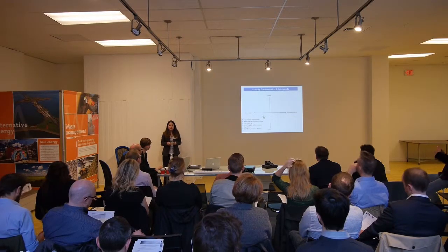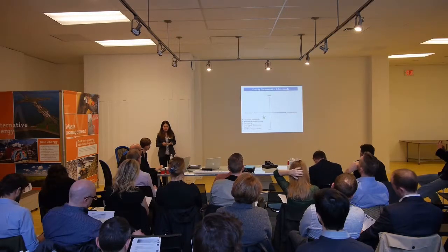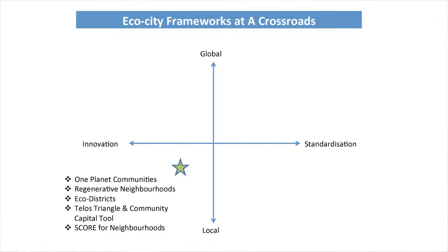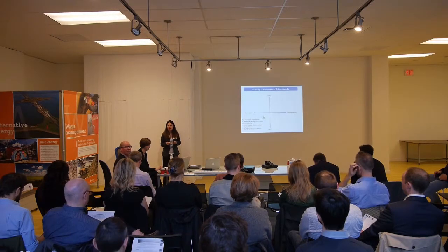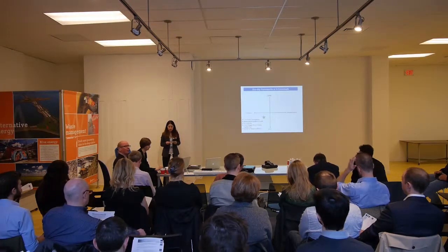The Sunflower Map, One Planet Communities, One Planet Communities Context, One Planet Communities Regenerative Neighborhoods, Eco Districts, Telos Triangle, Community Kaftal, and CORE for Neighborhoods — we believe these belong mainly in the third bottom-left quadrant, which represents scenario three.